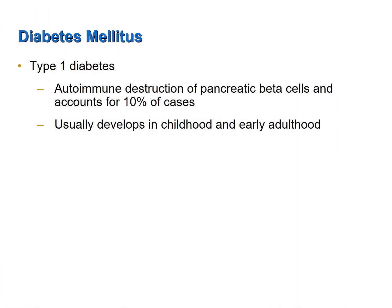There are two types of diabetes mellitus. Type 1 diabetes usually develops during childhood or early adulthood and has historically been called childhood onset diabetes. In type 1 diabetes, the immune system attacks and destroys the beta cells of the pancreas, so the individual can't make sufficient amounts of insulin. Because of the lack of insulin production, they require an exogenous source of insulin, and are often referred to as insulin-dependent diabetics. Type 1 accounts for less than 10% of cases.